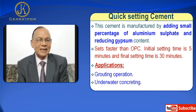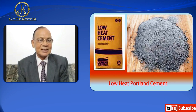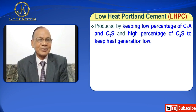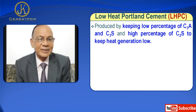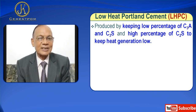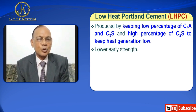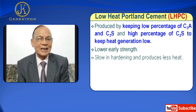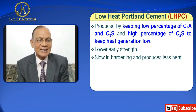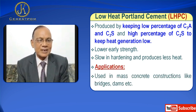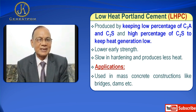Then we have Low Heat Portland Cement, LHPC. It is produced by keeping a low percentage of C3A and C3S and a high percentage of C2S to keep heat generation low. It has lower early strength, is slow in hardening, and produces less heat. Applications: used mainly for mass concrete constructions like bridges and dams.